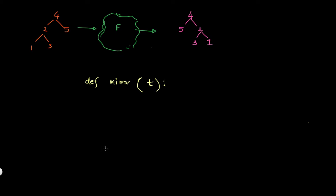Given the signature of this method, what I might do is: assuming that if T is None to begin with, then there's nothing to do, so I'm just going to do a return. That's acting as my base case here.